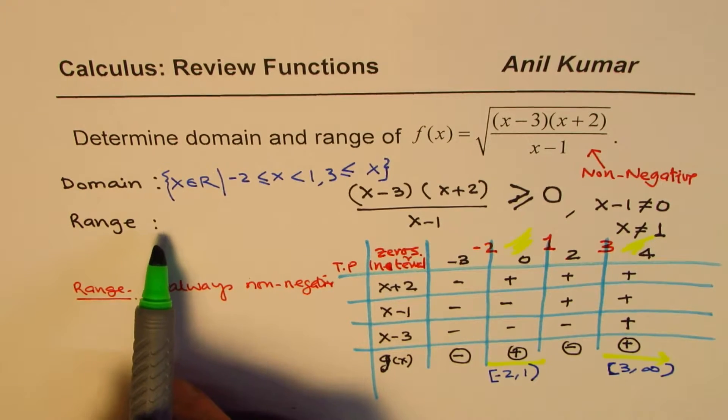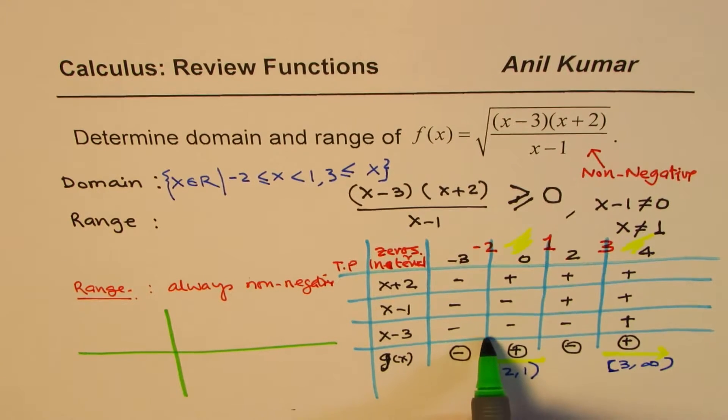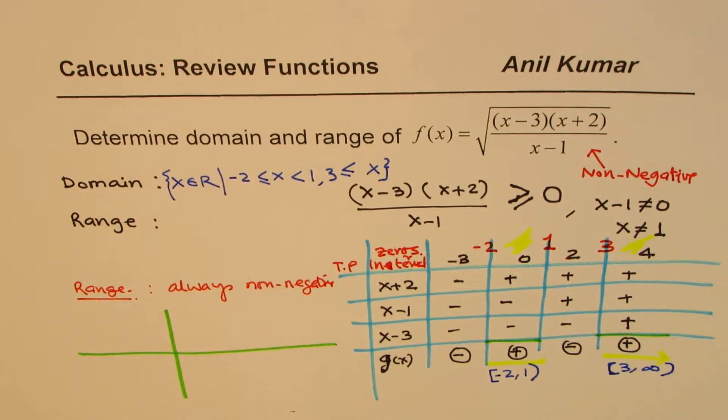Well, you could safely write range as greater than or equal to 0. But to be sure, let us try to sketch, not completely, but partly. So, what we will do here is, we know the 0s at least. And we also know the interval of our interest, which is from minus 2 to 1 and beyond 3.